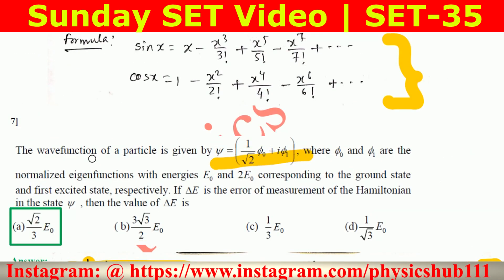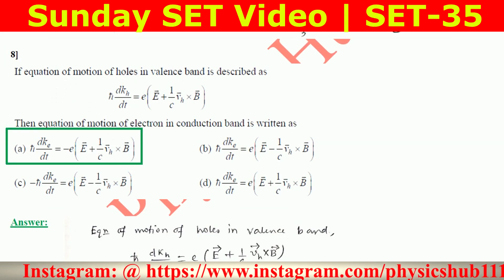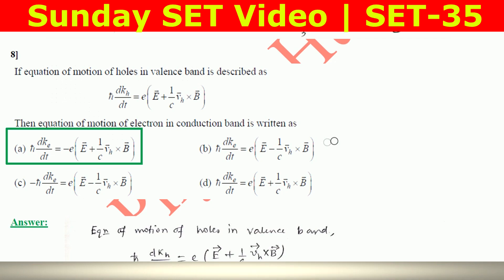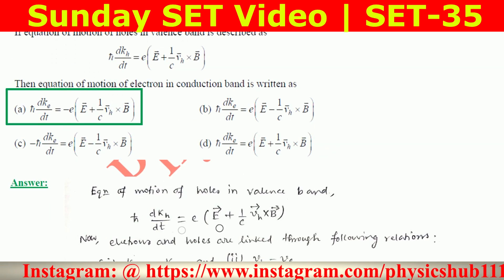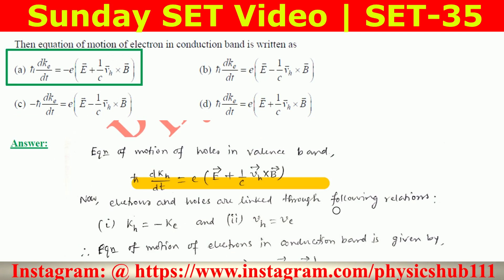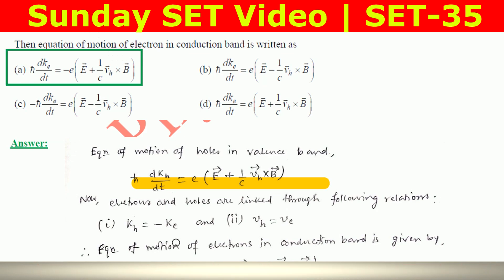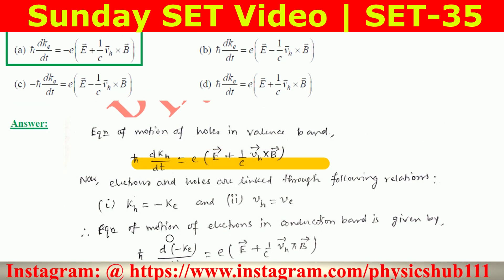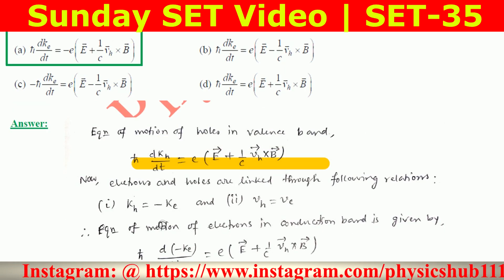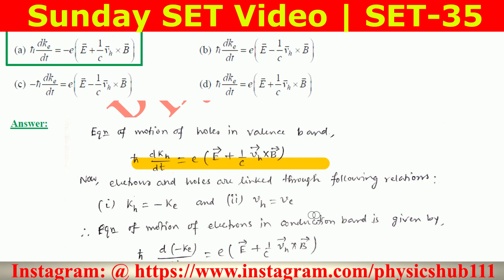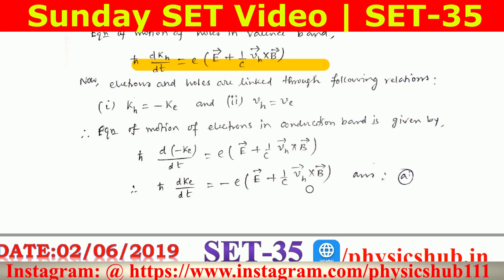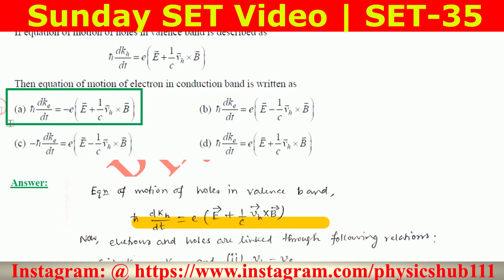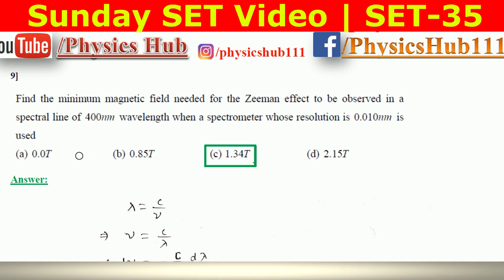Question 8: If the equation of motion of holes in the valence band is given as shown, find the equation of motion of electrons in the conduction band. Electrons and holes are linked by k_h = −k_e and B_h = B. Substituting these relations into the hole equation of motion and replacing k_h with −k_e and B_h with B, a minus sign appears, and the resulting equation matches option A, so option A is correct.